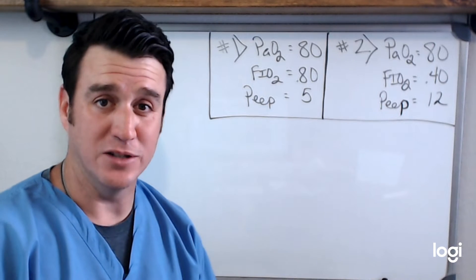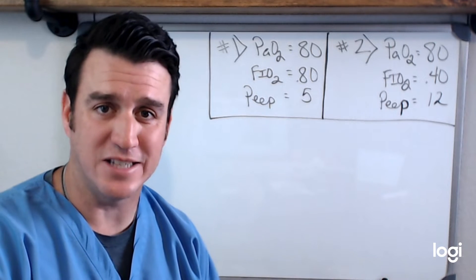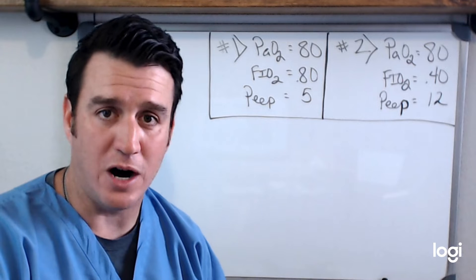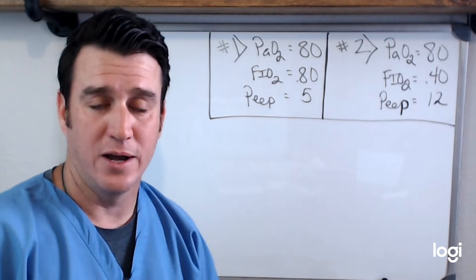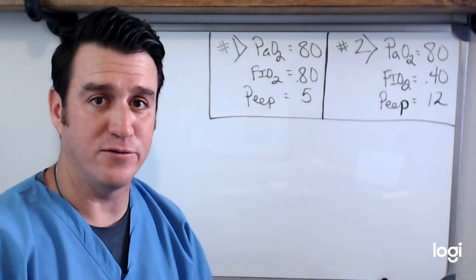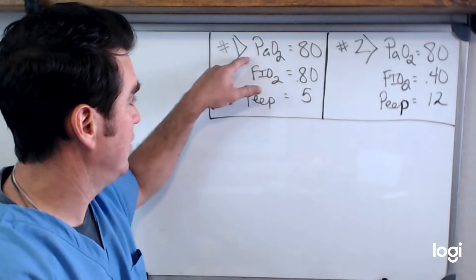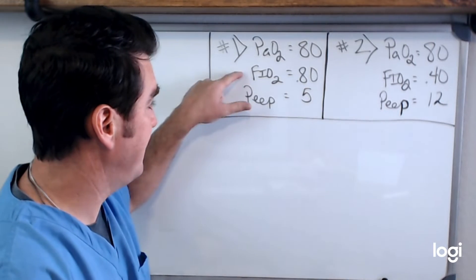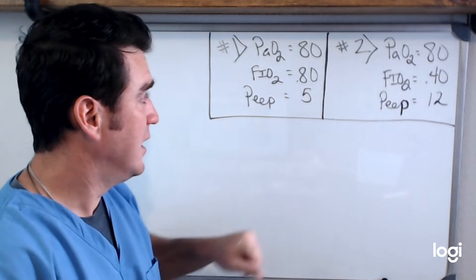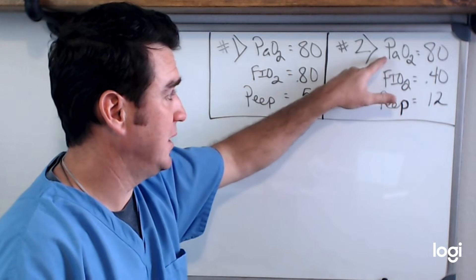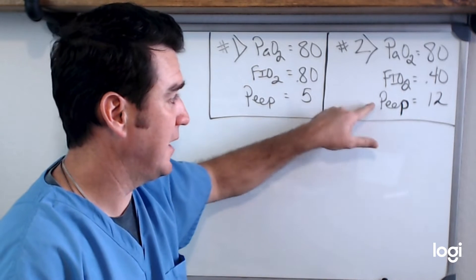What we're going to talk about today is the first of a three-part series where we're talking about oxygenation status and how not all oxygenation statuses are the same. If you look on the board I have right here, you'll see two different patient scenarios. Patient one has a PaO2 of 80, an FiO2 of 80, and a PEEP of 5. Patient two has a PaO2 of 80, an FiO2 of 40, and a PEEP of 12.